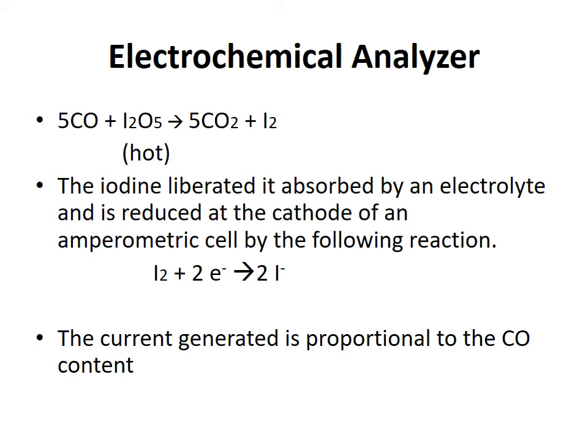The next method for carbon monoxide analysis is the electrochemical analyzer. The gas sample containing CO is passed over hot iodine pentoxide at 150°C, liberating iodine gas: 5CO + I₂O₅ → 5CO₂ + I₂. The liberated iodine is absorbed by an electrolyte and reduced at the cathode of an amperometric cell by: I₂ + 2e⁻ → 2I⁻. The current produced is a quantitative measure of the carbon monoxide content of the sample.